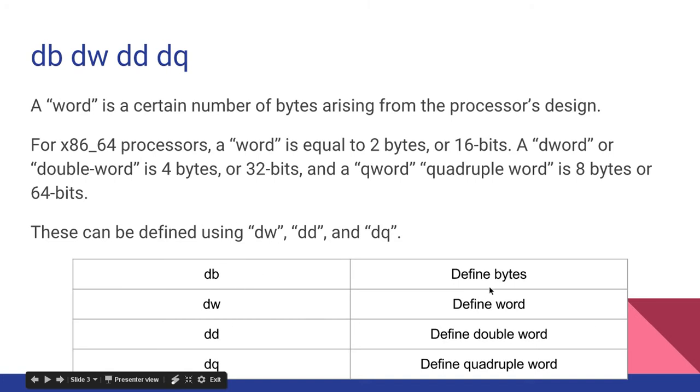So DB, as we learned in the past, is defined bytes, DW is defined word, DD is defined double word, and DQ is defined quadruple word.